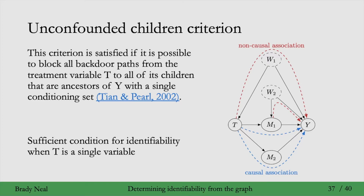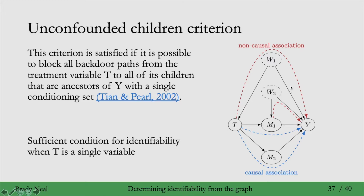Let's visualize the flow of association in the graph from the previous question. The path from t to w1 to y can't be blocked because w1 is not observed - that's why we can't use the backdoor criterion. And the path from m1 to w2 to y, where w2 is not observed, is why we can't use the frontdoor criterion.